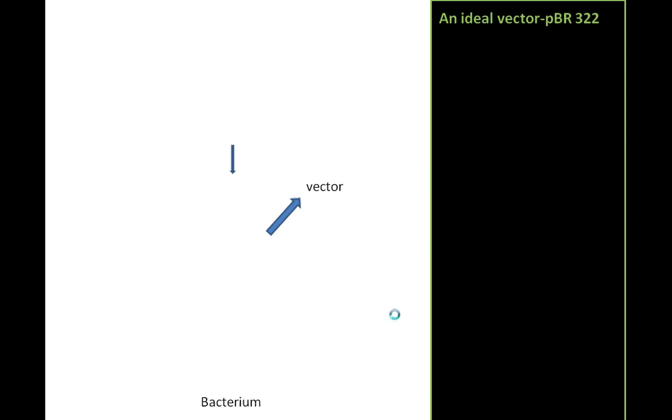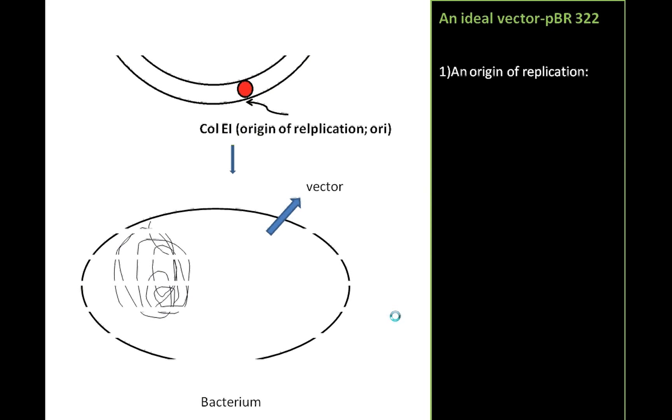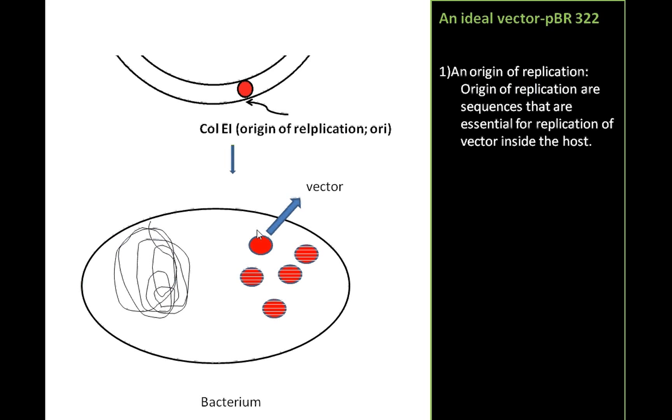Now, let us move into the detail. Why do we need an ORI, origin of replication? Usually our host is bacterium. You can see the genomic DNA, bacterial DNA right here. We are introducing our vector by transformation. An ORI, origin of replication, are sequences that are required for replication of this vector inside the host.